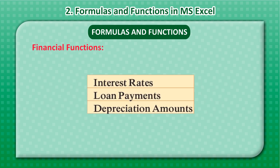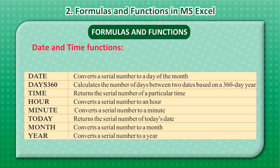Financial Functions include Interest Rates, Loan Payments, and Depreciation Amounts. Date and Time Functions include: Date, which converts a serial number to a day of the month; and Days360, which calculates the number of days between two dates based on a 360-day year.